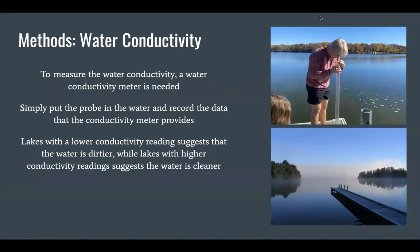The first method is water conductivity. To measure water conductivity, a water conductivity meter is needed. You simply put the probe in the water and record the data that the meter provides. Lakes with a lower conductivity reading suggest that the water is dirtier, and lakes with a higher reading suggest the water is cleaner.